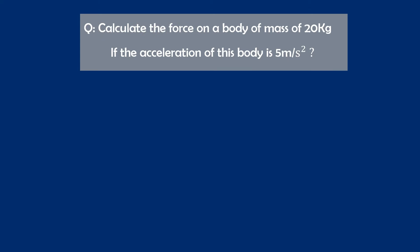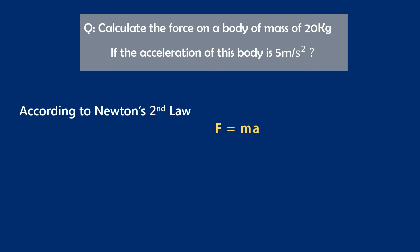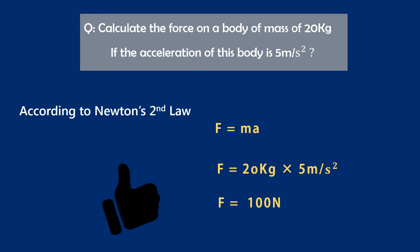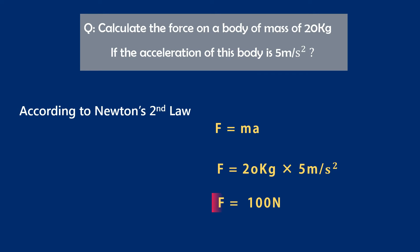Hence it is very easy. According to Newton's second law, F is equal to ma. We should remember that this equation relates the three physical quantities given in the numerical. Hence we put the values of mass and acceleration in this equation: F is equal to 20 kg multiplied by 5 meter per second square. Thus I get F is equal to 100 newton. It means that this body experiences a force of 100 newton.